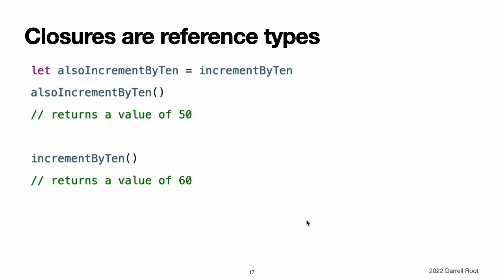Closures are reference types. In the example above, incrementBy7 and incrementBy10 are constants, but the closures these constants refer to are still able to increment the running total variables that they have captured. This is because functions and closures are reference types. Whenever you assign a function or a closure to a constant or a variable, you are actually setting that constant or variable to be a reference to the function or closure. In the example above, it is the choice of closure that incrementBy10 refers to that is constant, and not the contents of the closure itself. This also means that if you assign a closure to two different constants or variables, both of those constants or variables refer to the same closure. This example shows that calling alsoIncrementBy10 is the same as calling incrementBy10, because both of them refer to the same closure; they both increment and return the same running total.